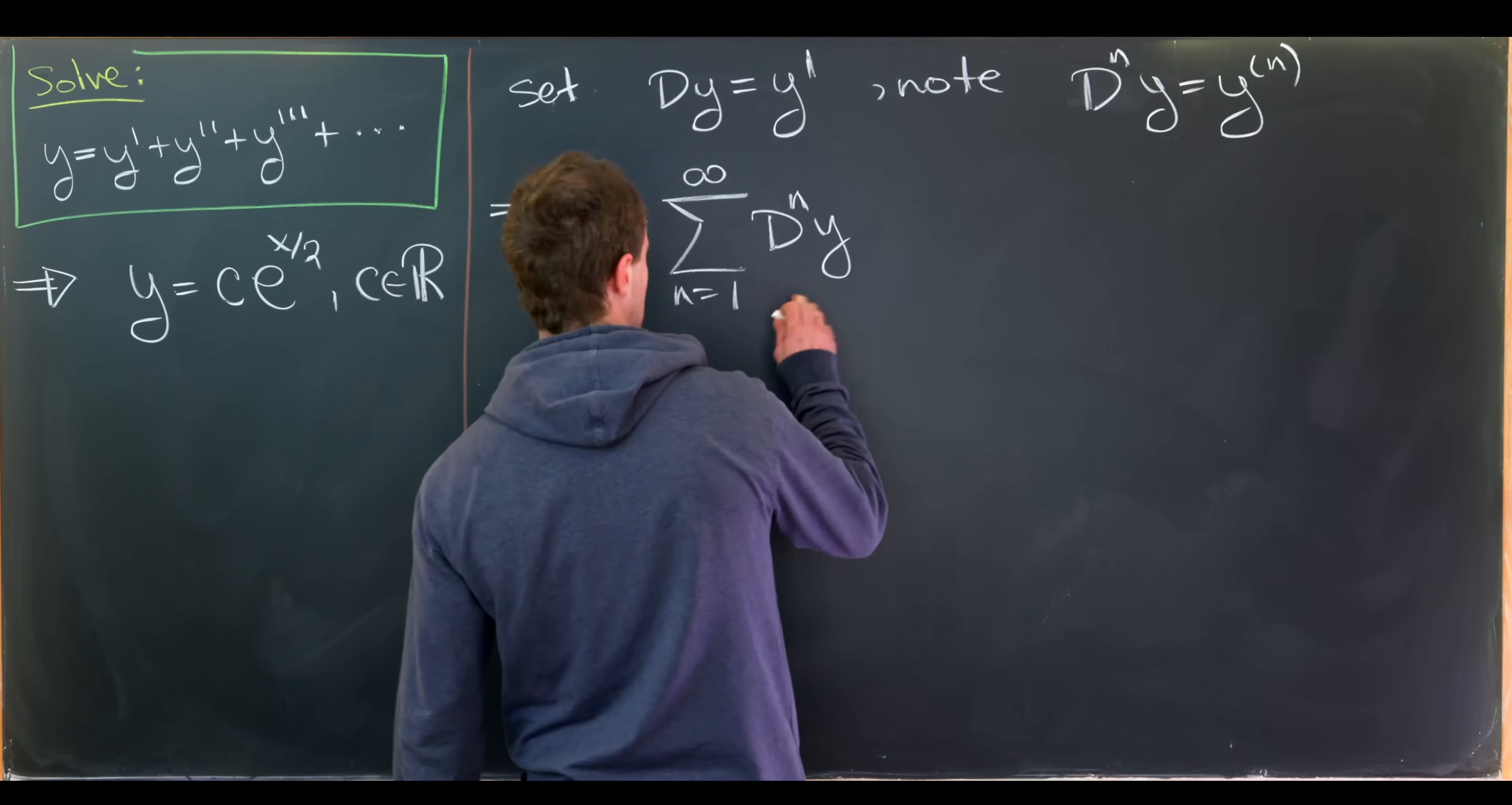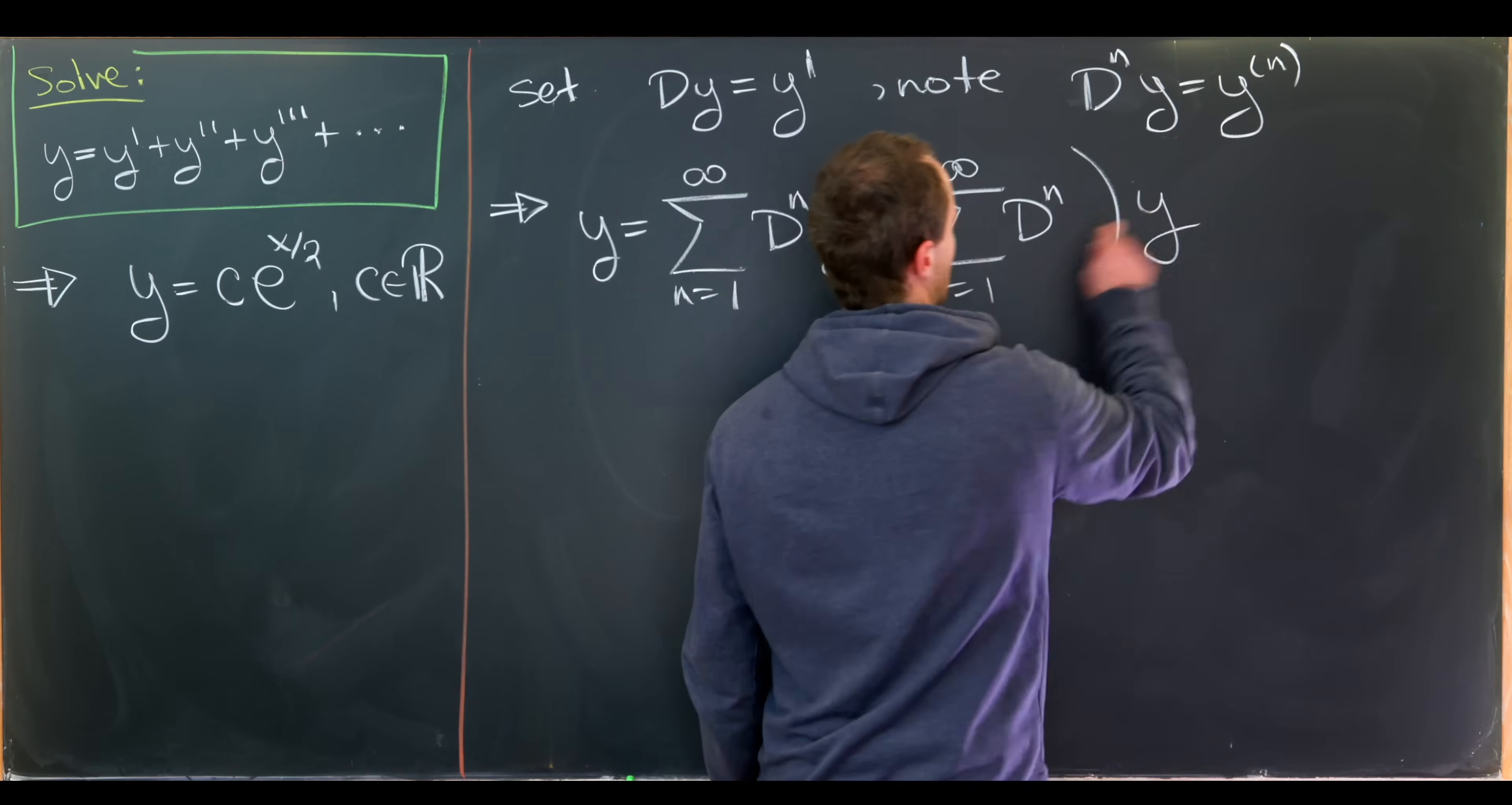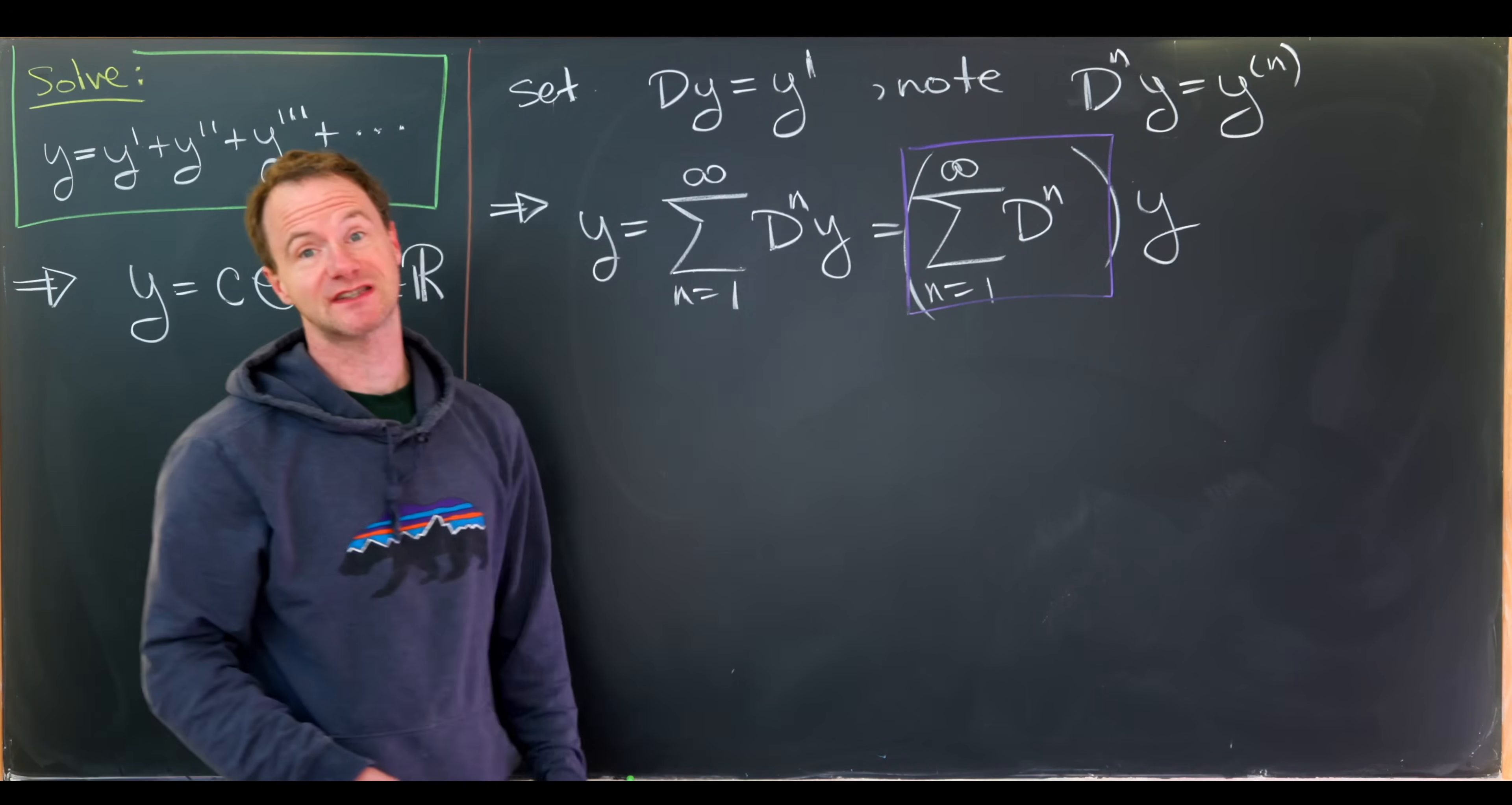That means we can rewrite our differential equation as y equals the sum as n goes from 1 up to infinity of d to the n y. But now I'll factor the y out of the right hand side. It's not really factoring because really these are operators acting on y but I think the language there is okay. So this stuff that I'm putting this purple box around is a sum of these linear operators.